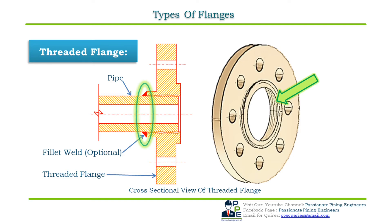Threaded flanges are available in sizes up to 4 inch NPS and multiple pressure ratings. They are mostly used in small bore sizes up to 1.5 inch NPS in low pressure and low temperature applications such as water, air, and utility services.